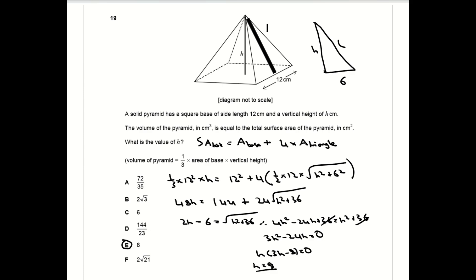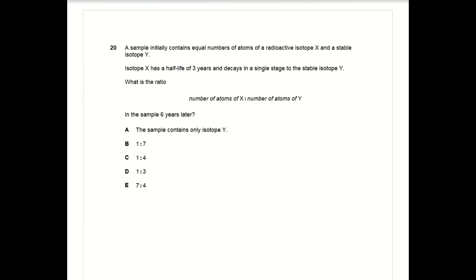Last question of the paper, question 20. For these types of isotope decay questions it helps to have a table where you can write down the quantities of x and y at relevant timestamps. You know that at t equals zero, x and y are in equal proportions.